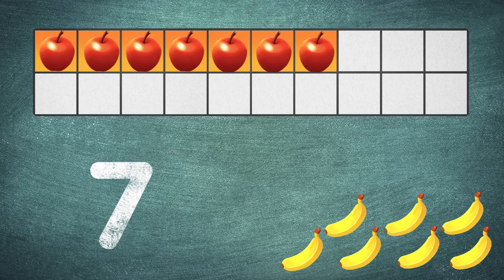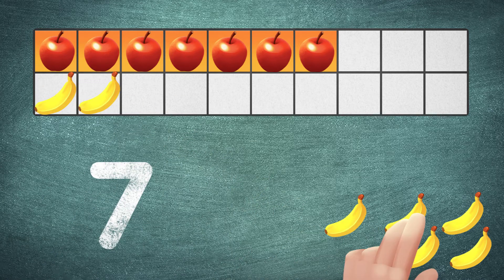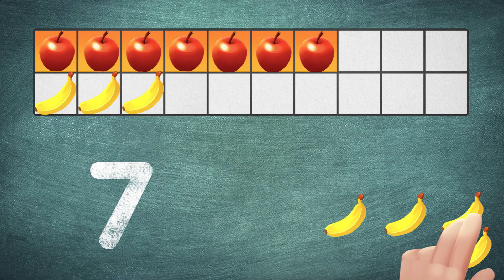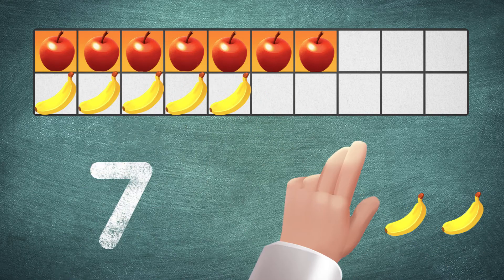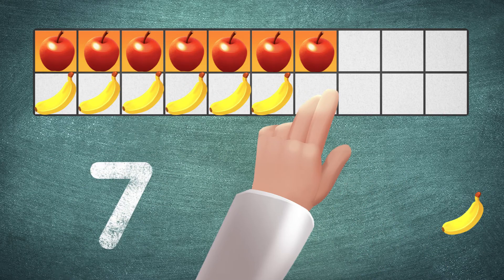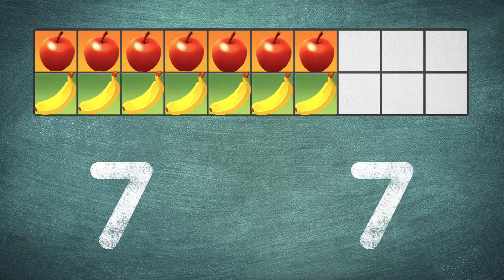There are seven apples. One, two, three, four, five, six, seven. Seven bananas. There are seven bananas.